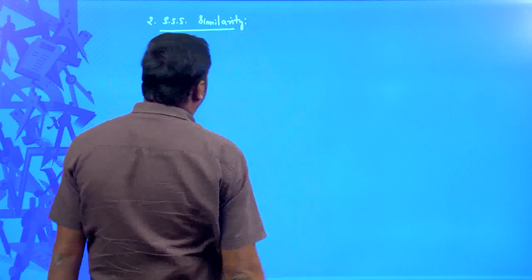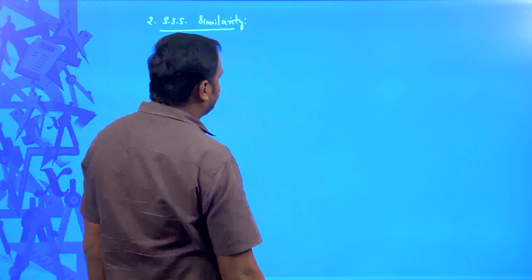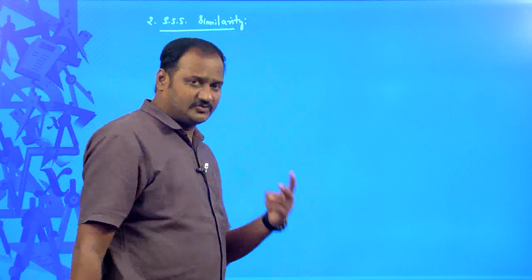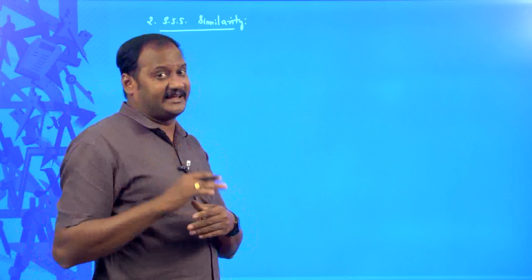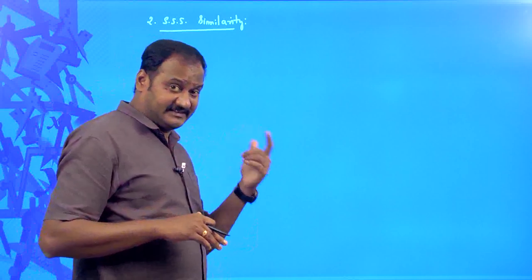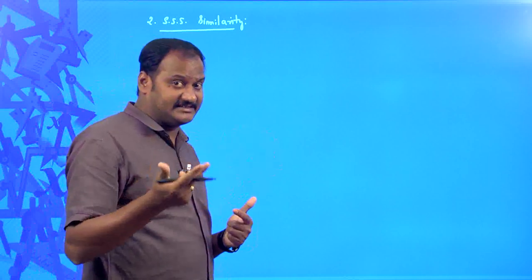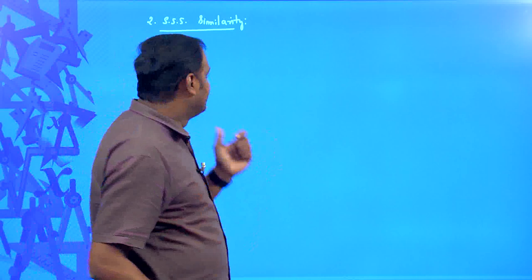In the SSS similarity criterion, you are given two triangles where the sides of one triangle are respectively proportional to the sides of the other triangle. Then their corresponding angles are equal. This is the converse of AAA similarity.